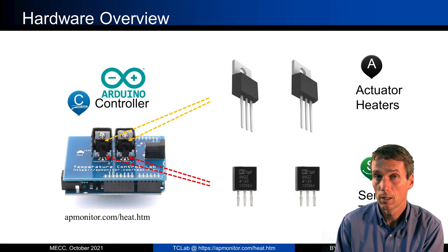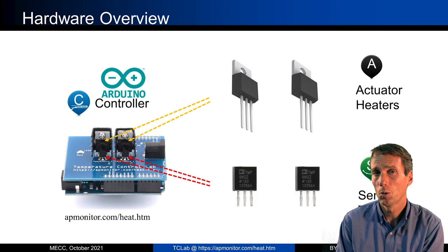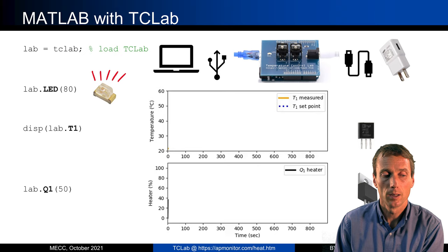The lab has two actuator heaters next to each other and two temperature sensors. If you slide a coin — like a copper penny — in between them, they become very coupled. But if there's an air gap, they don't feel as much of each other's effect. It's still a simple multivariate control problem, or you can use it as a univariate control problem as well.